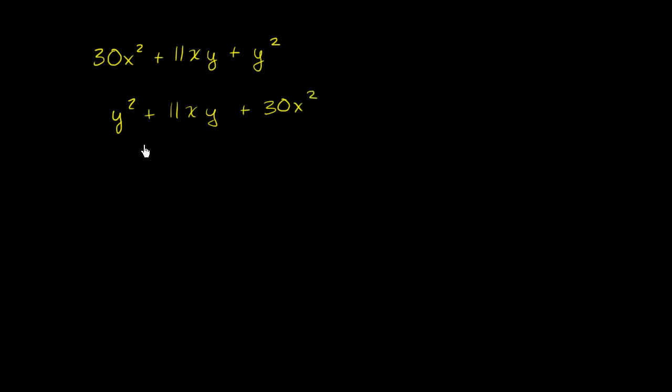My whole motivation for doing that - there are ways to factor a quadratic where your coefficient on this first term is something other than 1, but we haven't seen that yet. So rearranging it this way kind of got us into our comfort zone. Now our coefficient is 1 on the y squared term.